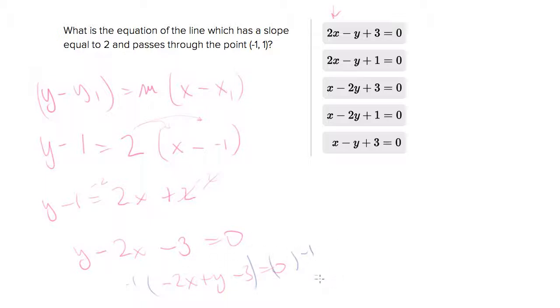So once you do that you'll end up with 2x minus y plus 3 equals 0. And we do have that. That's the first answer choice.